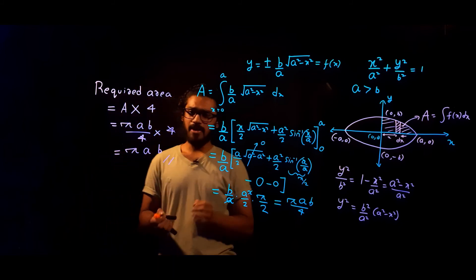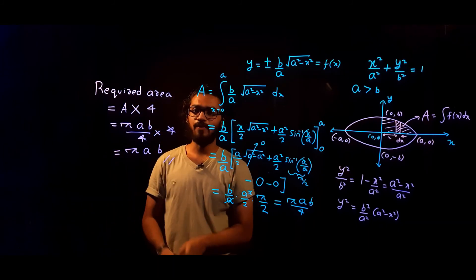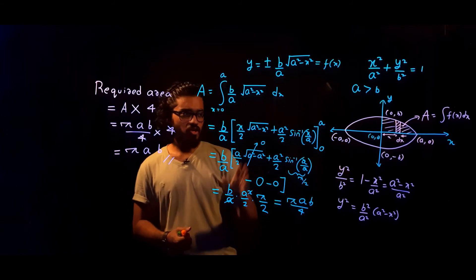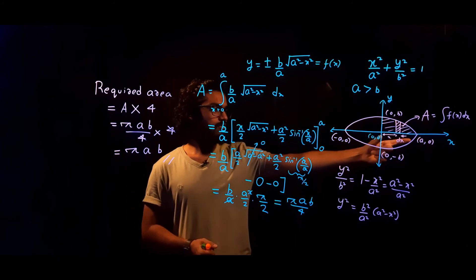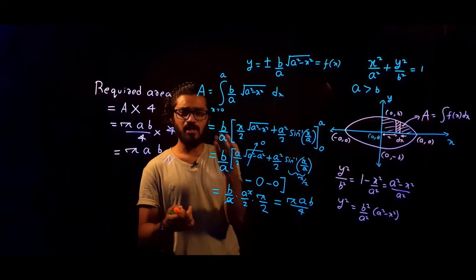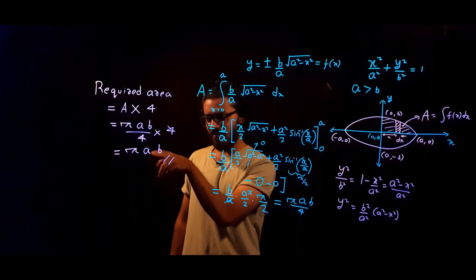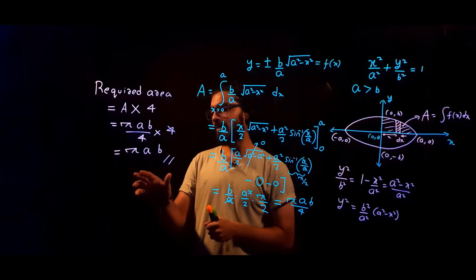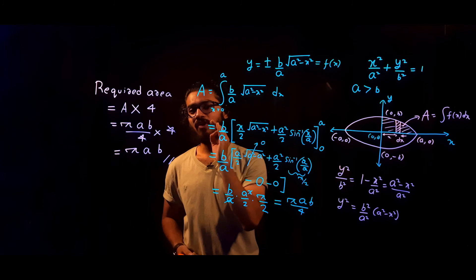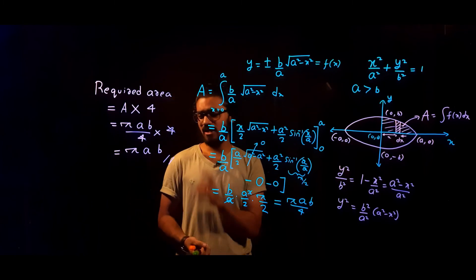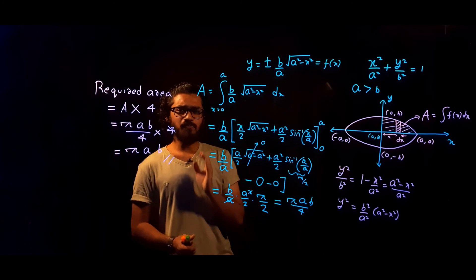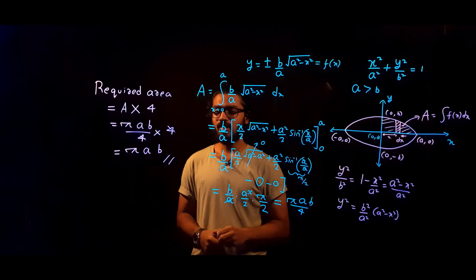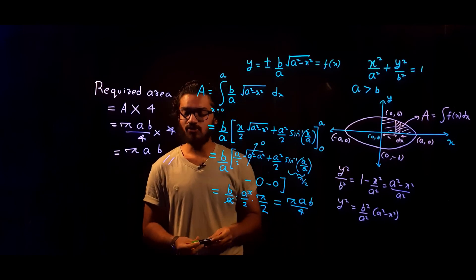As you can see, an ellipse is a generalized version of a circle. If a and b are made equal to r, substituting gives πr², which is the area of a circle — confirming our result is correct. I hope you understood the area of an ellipse. Thank you so much for watching.